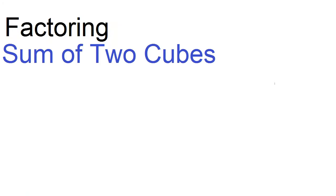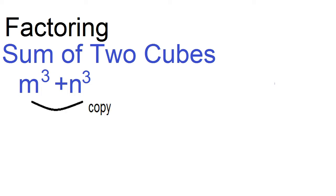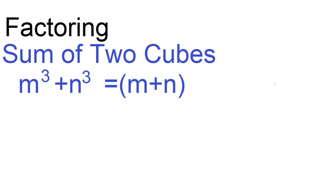Factoring sum of two cubes. This is the form of sum of two cubes: m cubed plus n cubed. To factor, just copy the base and the operation. This is the first factor: n plus n.